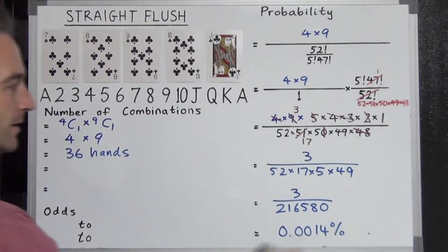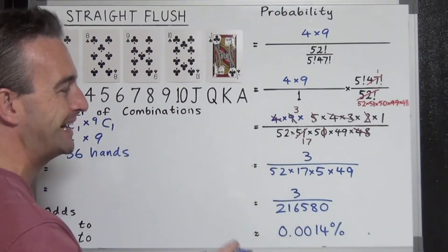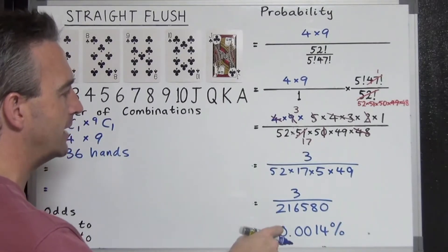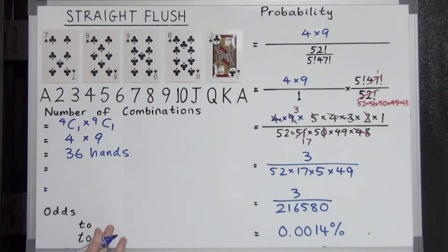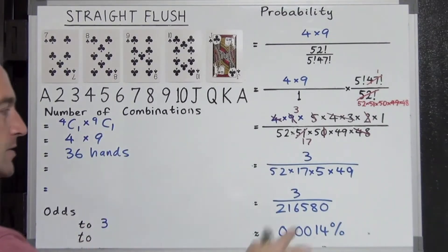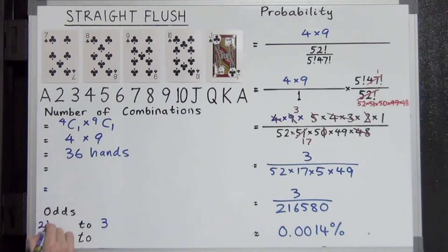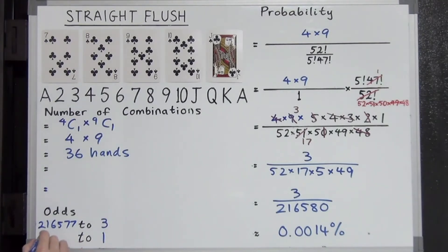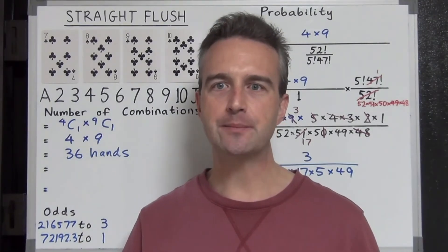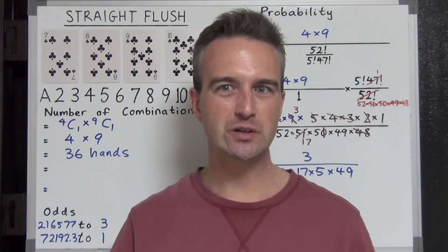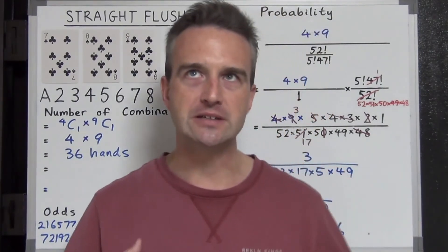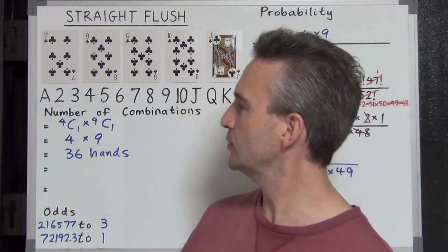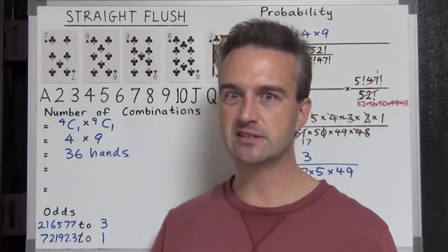Taking a look at the odds now: for every 216,585 five-card poker hands, you can expect on average 3 of them to be straight flushes. For every 3 straight flushes, that leaves 216,577 hands that are not straight flushes on average. Dividing both by 3, we get 1 straight flush for every 72,192.3 hands — roughly 70,000 to 1. Really, really rare. To put that in perspective, if you played 20 hands of poker a week, you could expect a straight flush once every 70 years — once in a lifetime.